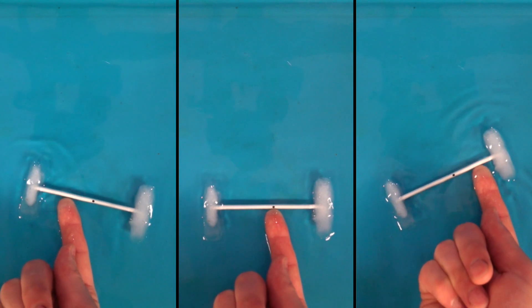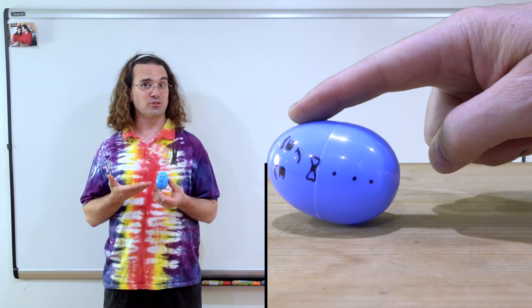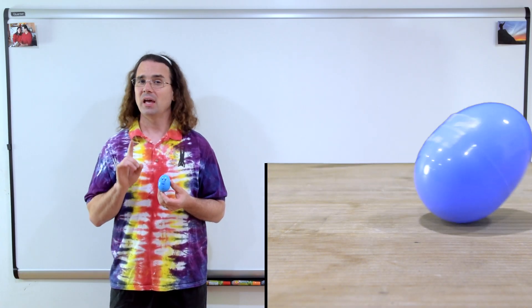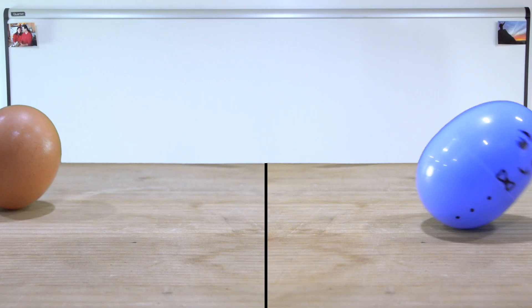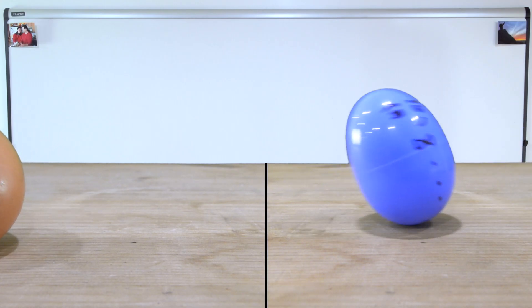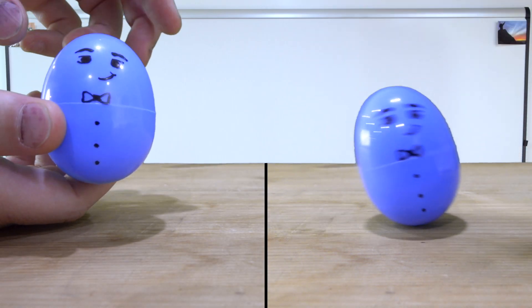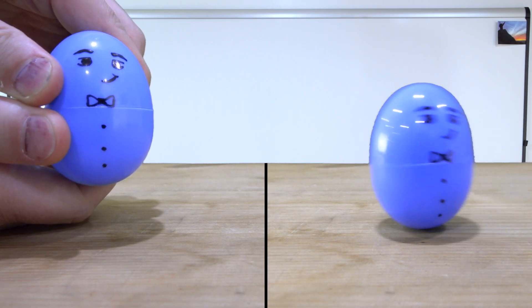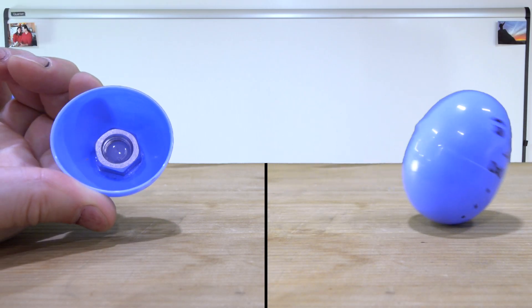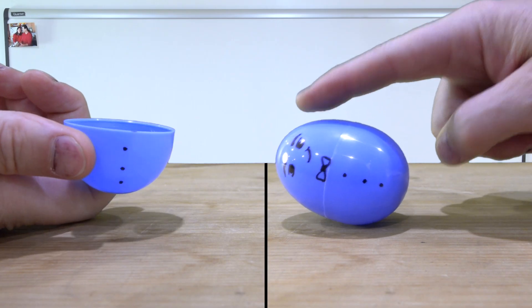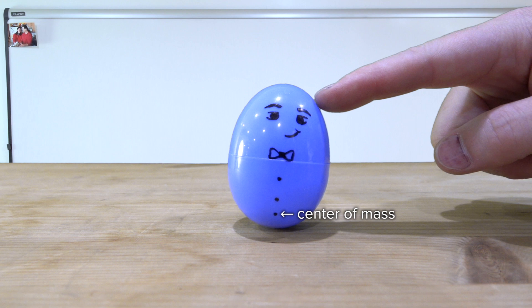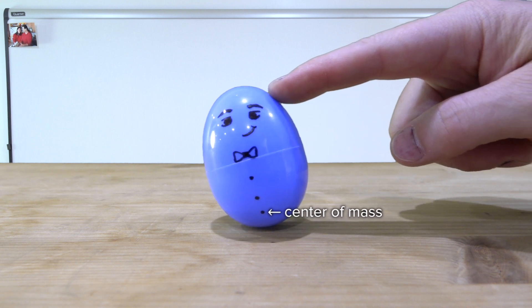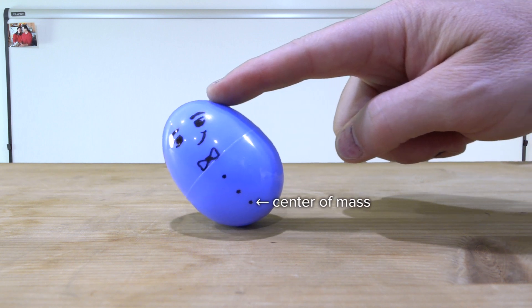Another fun example of center of mass is a Weeble, which is an egg-shaped toy which always returns to an upright position. A normal egg placed on its end will fall over. However, this toy I made stands on its end. The way I made the toy was by hot gluing a large mass into the bottom of the plastic egg. What that does is, it moves the center of mass of the egg so it is very near the bottom of the egg.